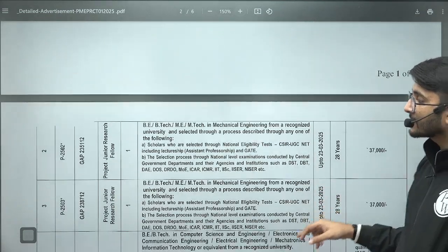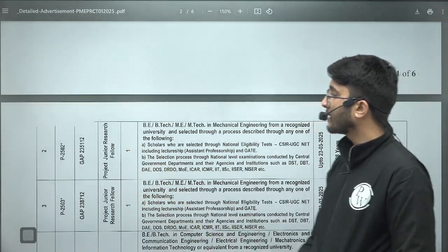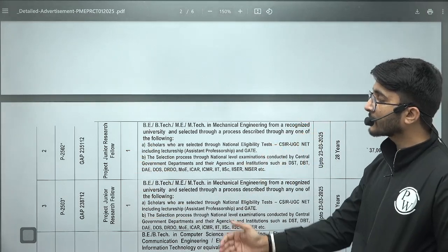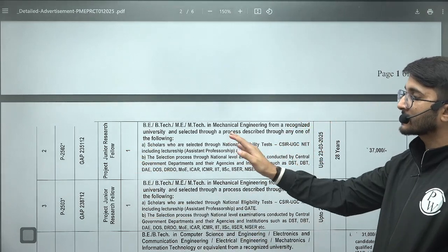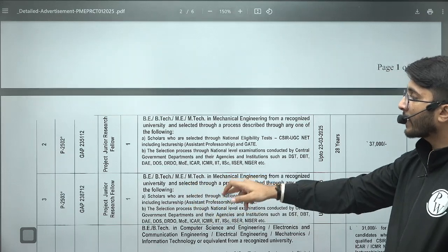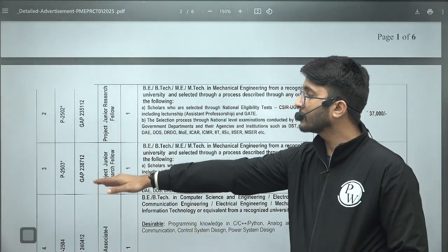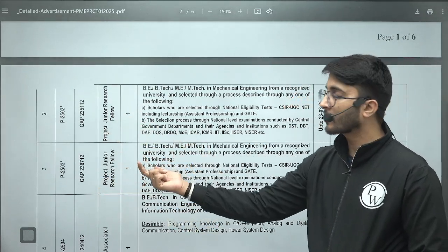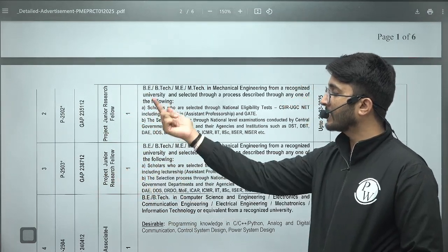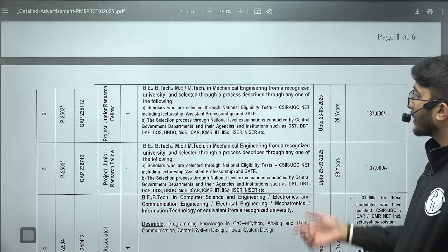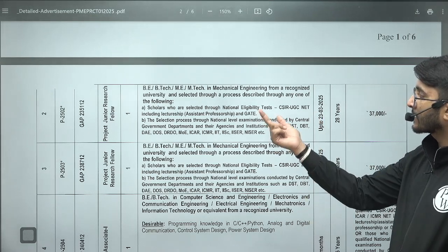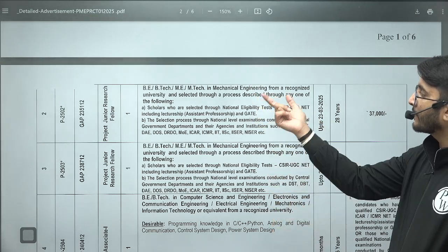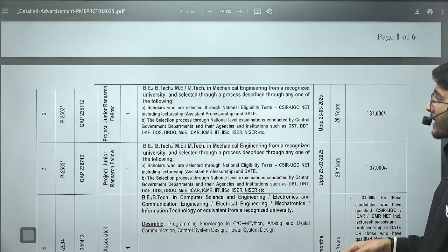Similarly, there are project junior research fellowship requirements. This requirement is project-based and it will go throughout the year. That's why the vacancy numbers come in the same manner. You can observe different project codes are there, and accordingly whatever the main requirement is, they mention in a separate way. GATE scorecard validity is required and mechanical engineering students can apply in this requirement with 37,000 rupees stipend.